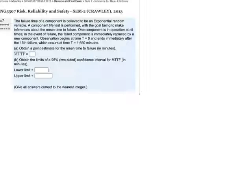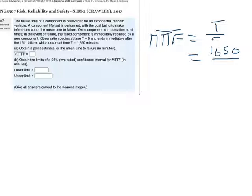So firstly obtain a point estimate for the mean time to failure. Well that bit is going to be easy. The point estimate is just going to be equal to the total number of minutes divided by the total number of failures, which is going to give us 1650 over r, which is 15. So 110 minutes is going to be our point estimate.